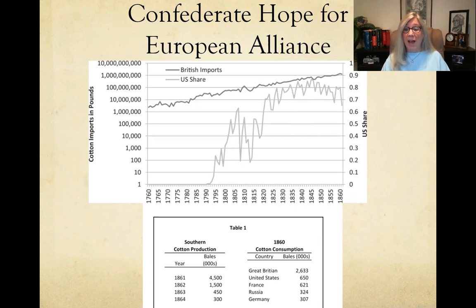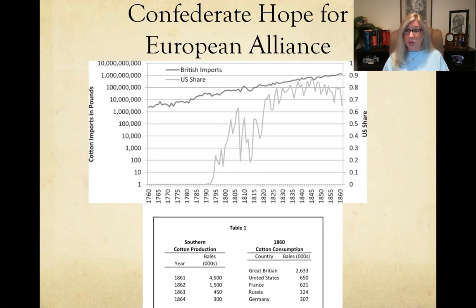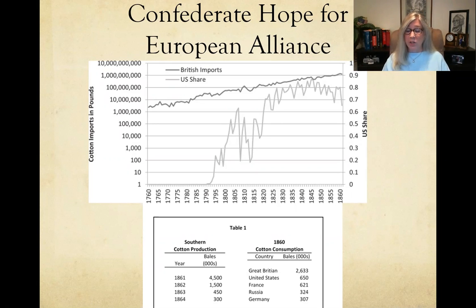They knew Great Britain was financially dependent on these seceded states. What they weren't banking on was that by 1860 this had changed — the British had found other options, purchasing Egyptian cotton and Indian cotton. That's going to cause them not to want to get involved in this war. They could find other economic means to supply their textile mills, and as the war became more entrenched with conflict over slavery and emancipation, that caused the British to not want to get involved as readily.